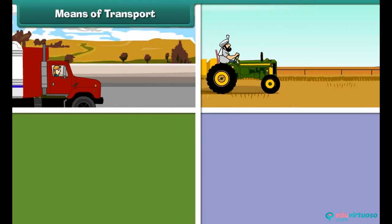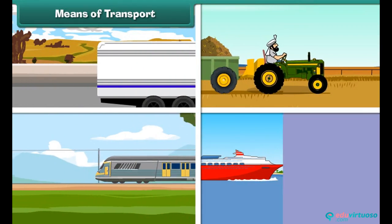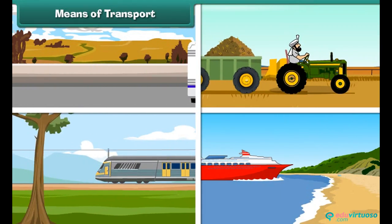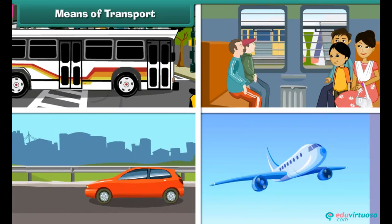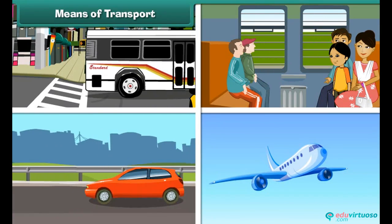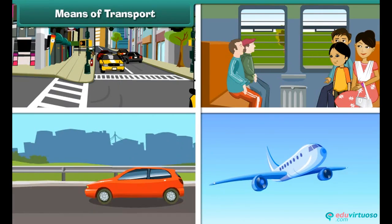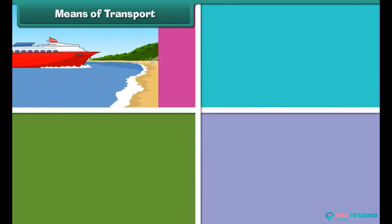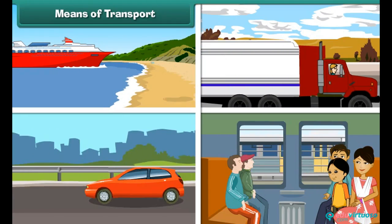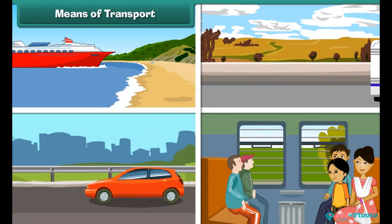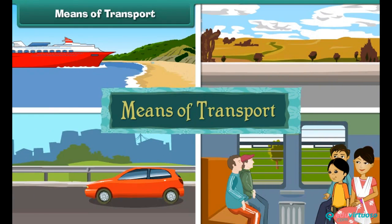We use trucks, tractors, goods trains, ships, and cargo planes to carry goods, and buses, trains, cars, and airplanes to carry passengers from one place to another. Different carriers of goods, animals, and people from one place to another are known as the means of transport.